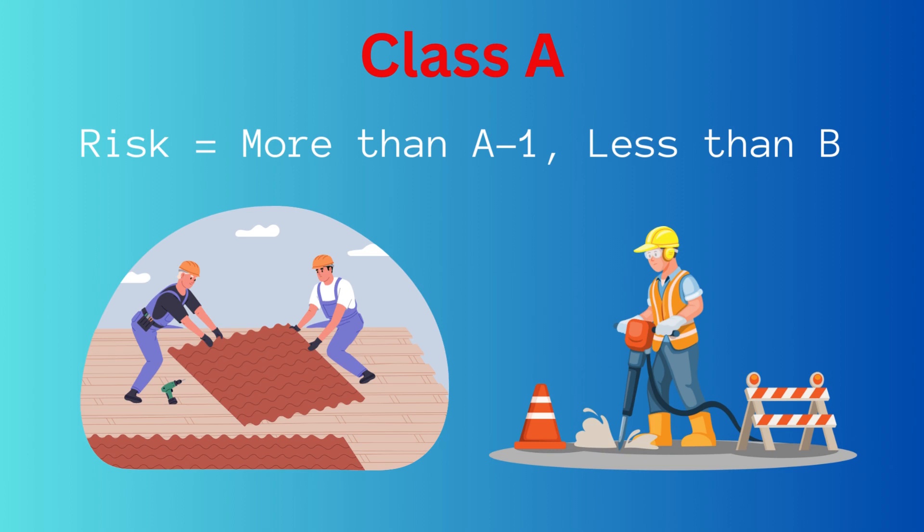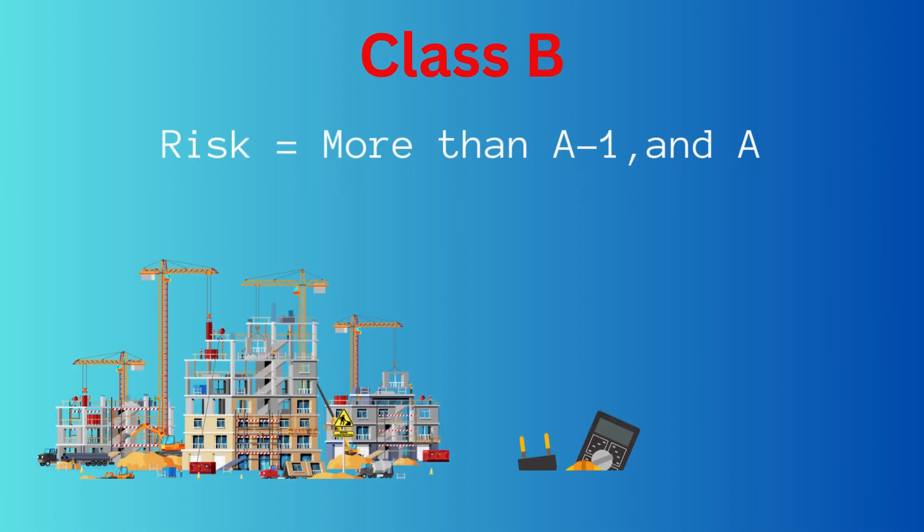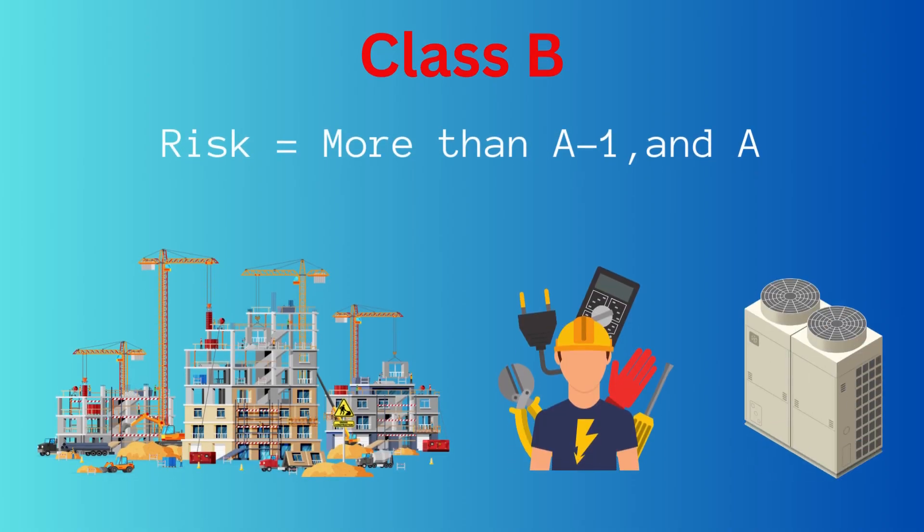Class A work is considered more risky than A1 but less risky than class B. Class A work includes scopes such as concrete paving, roofing, and others.